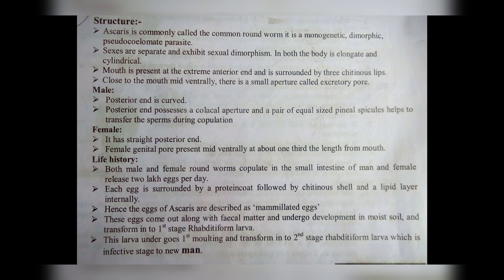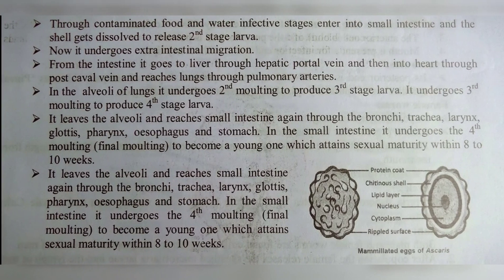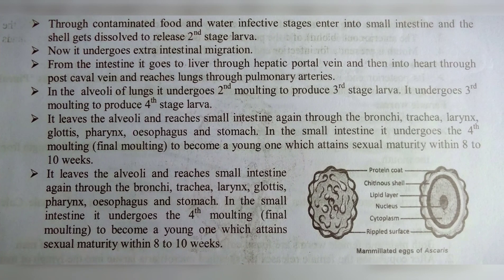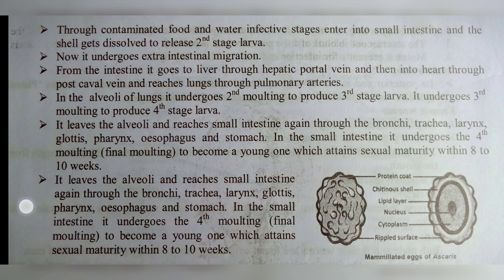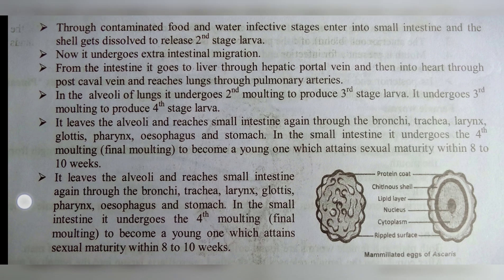Through contaminated food and water, the infective stage larvae enter the small intestine, where the shell gets dissolved to release the second-stage larvae. The larvae then enter the bloodstream of the human and undergo extra-intestinal migration. From the intestine, they travel to the liver through the hepatic portal vein, then into the heart through the postcaval vein, and reach the lungs through the pulmonary arteries.